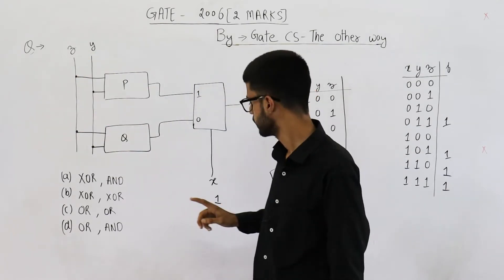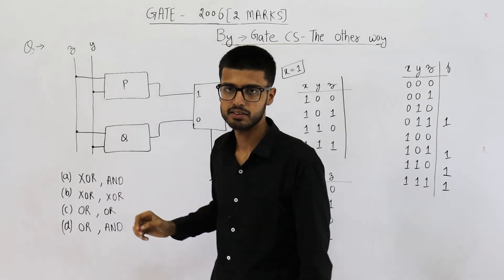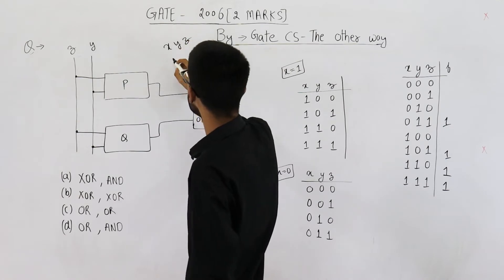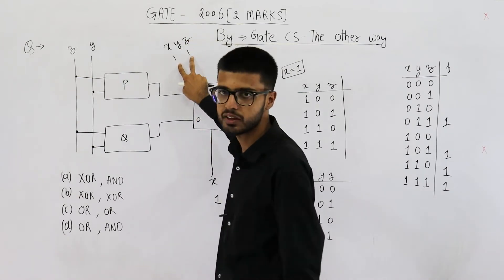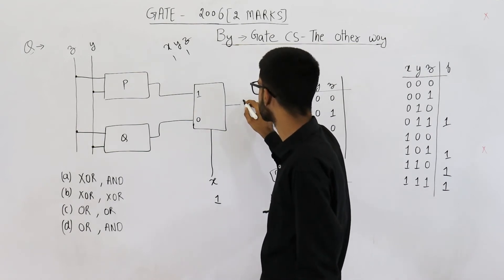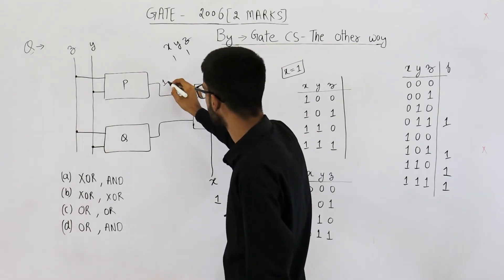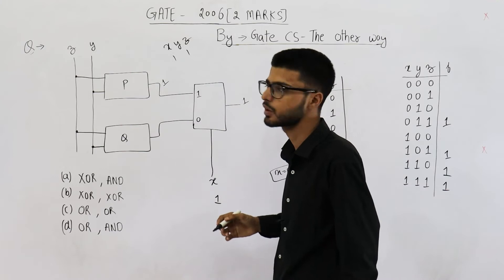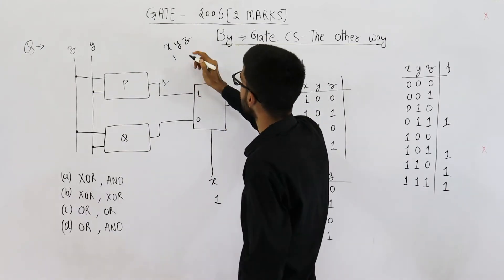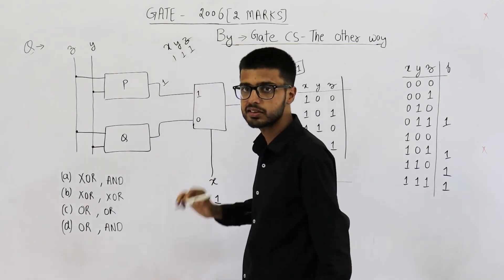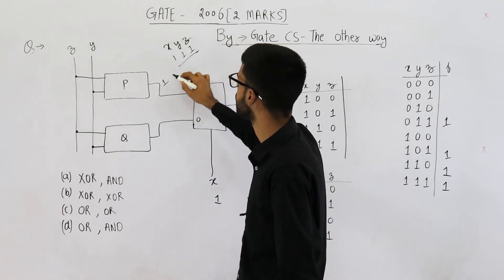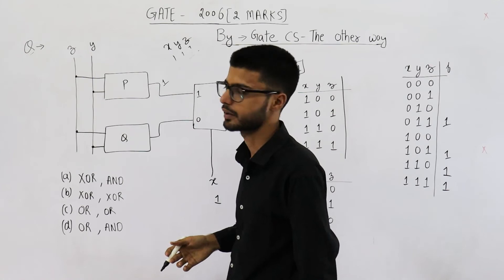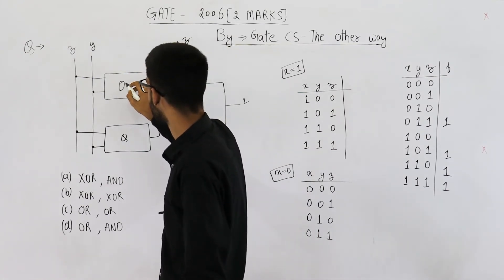When X is one and any one of Y or Z is also high, that means two of the three inputs are high — so we want the output to be one, meaning P must output a one. Even when both Y and Z are high along with X, the output should still be one since the majority of inputs are high. Therefore, P must be an OR gate — it outputs one whenever any one of Y or Z is high.